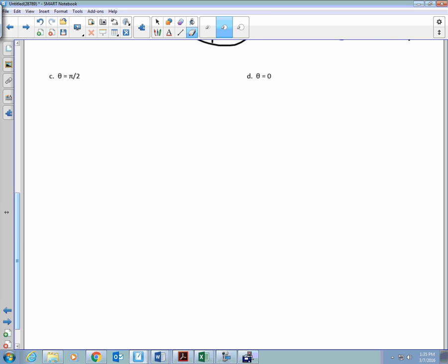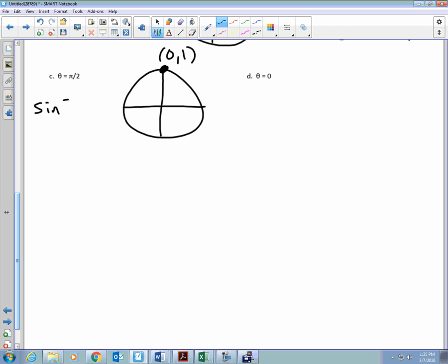We're going to look at theta is equal to pi over 2. What angle is pi over 2? 90 degrees. Do I have to make a triangle, or do you know the terminal point of 90 degrees? What is the terminal point? So sine will be 1. Cosine will be 0, and tangent of pi over 2 is going to be 1 divided by 0. You can't have 0 in the denominator. What word do we use for that? Undefined.